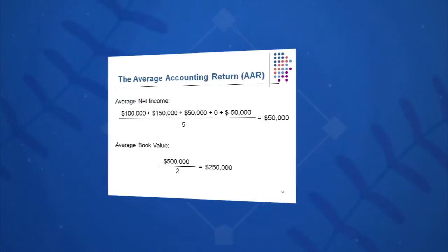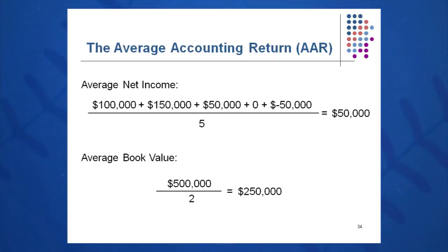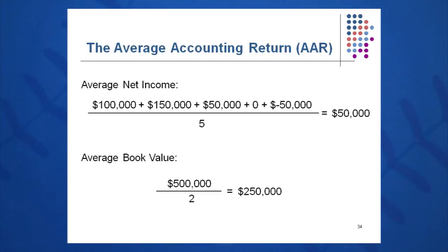For the AAR, we're going to build an income statement, and you can simply get the average net income by taking the bottom line, adding it up, and dividing by five because you have five years. So $100,000 plus $150,000 plus $50,000 plus $50,000, divided by five, gives you an average net income of $50,000.